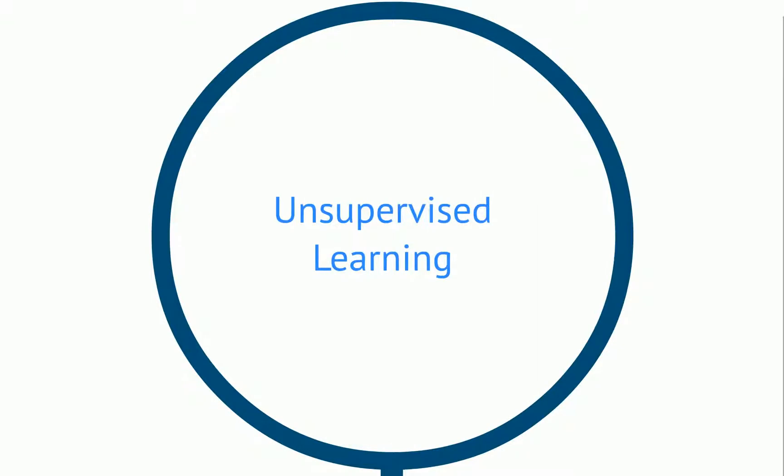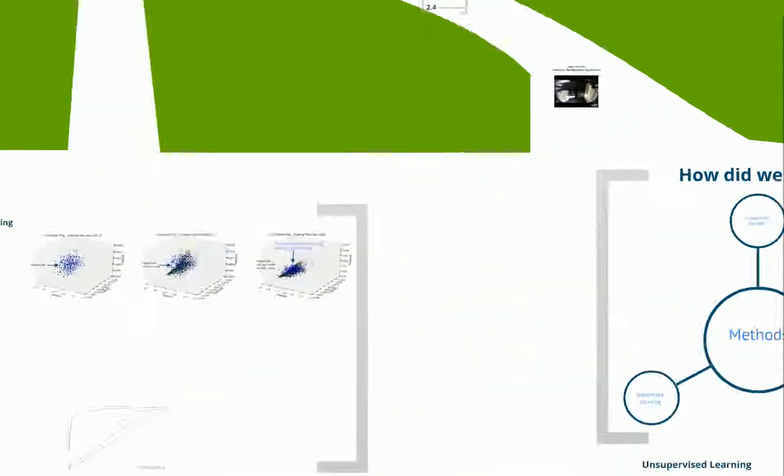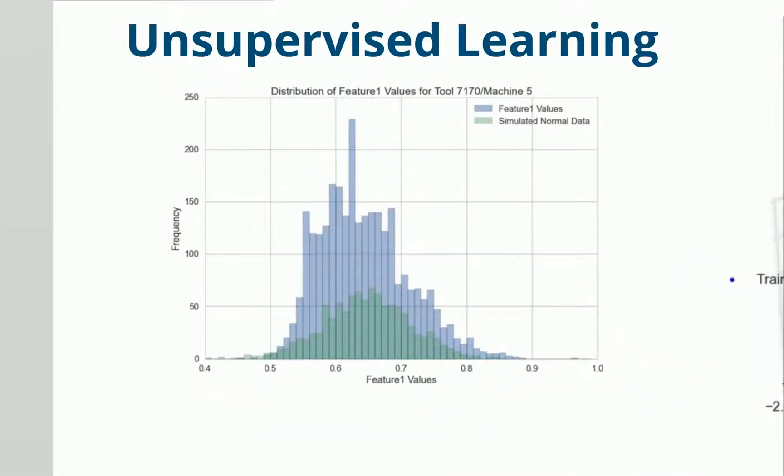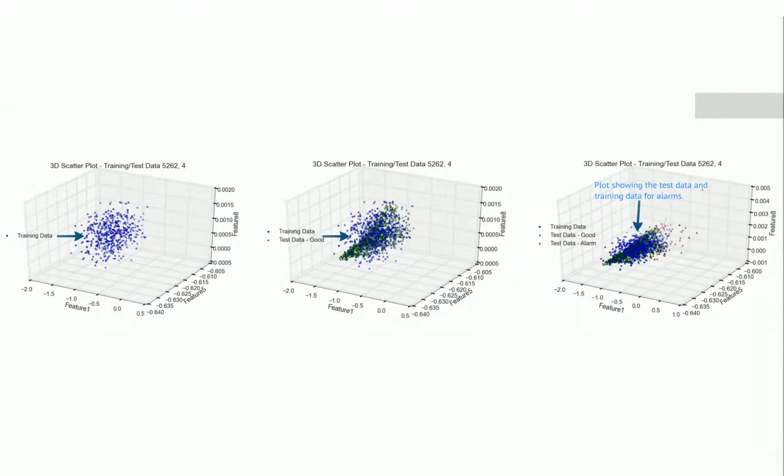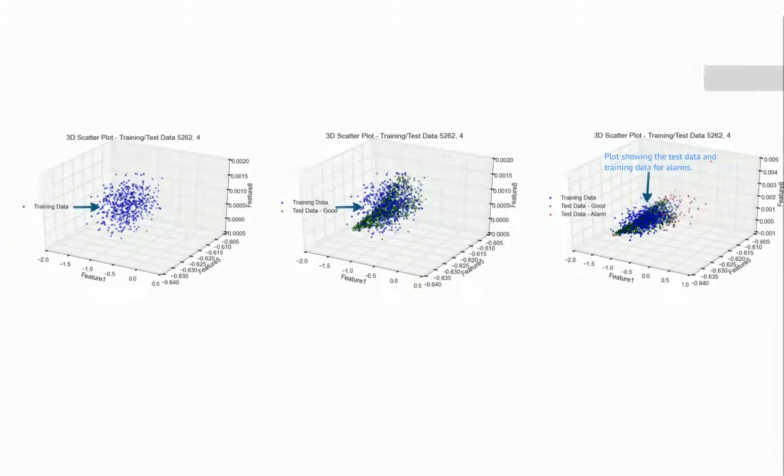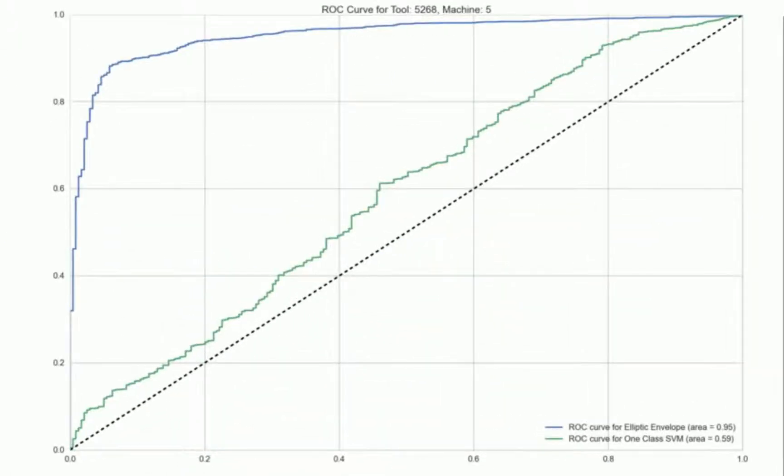For our third problem we did unsupervised learning. We examined features 1, 5 and 8 and calculated the average and spread for each individual machine and tool. We trained two different classifiers to detect values that were outside the normal population. We found that the elliptic envelope classifier performed better than the one class SVM based on ROC curves and 3D scatter plots.